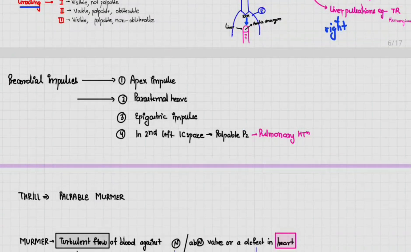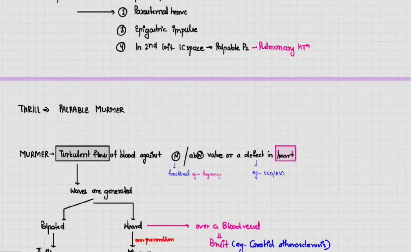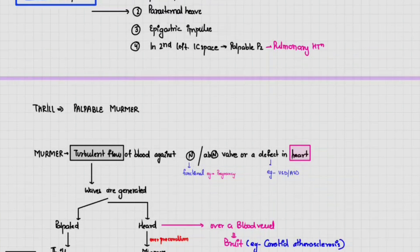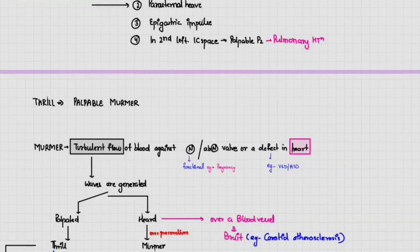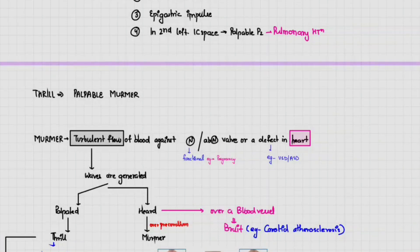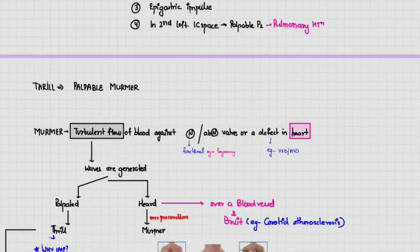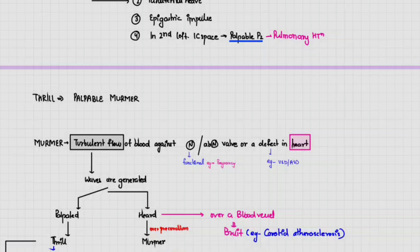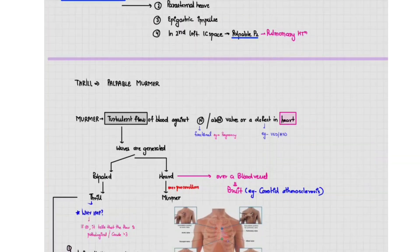To summarize, precordium means the area of the chest overlying the heart. Any impulse visible or palpable in this region is a precordial impulse, which includes the apex impulse, parasternal heave, and epigastric impulse. In some cases, such as pulmonary hypertension, there can also be a palpable P2 present in the second left intercostal space, which is also included in precordial impulses.